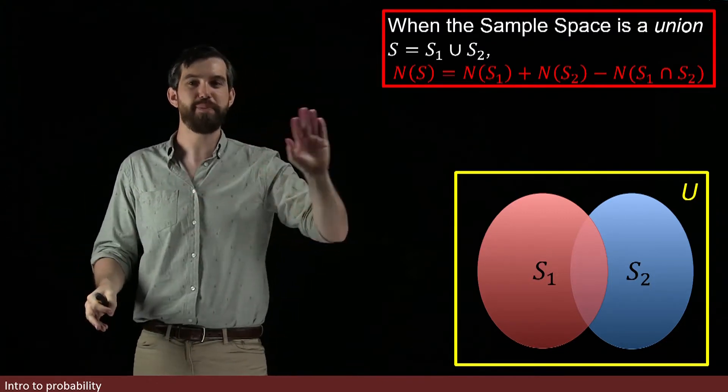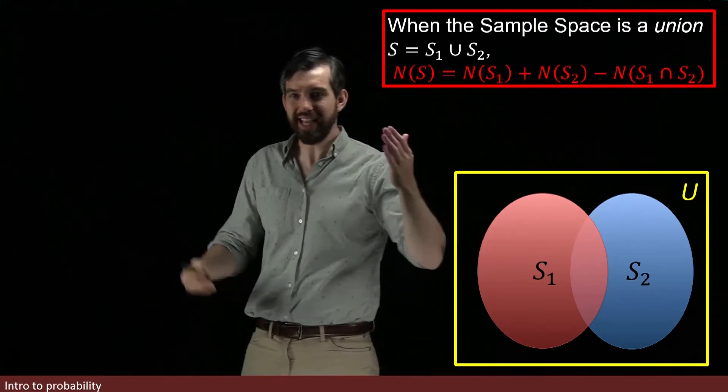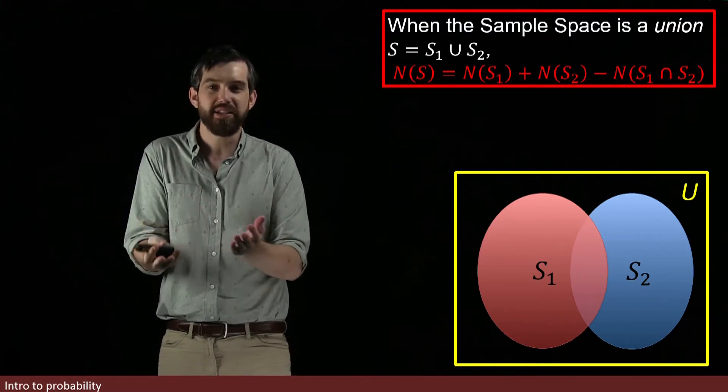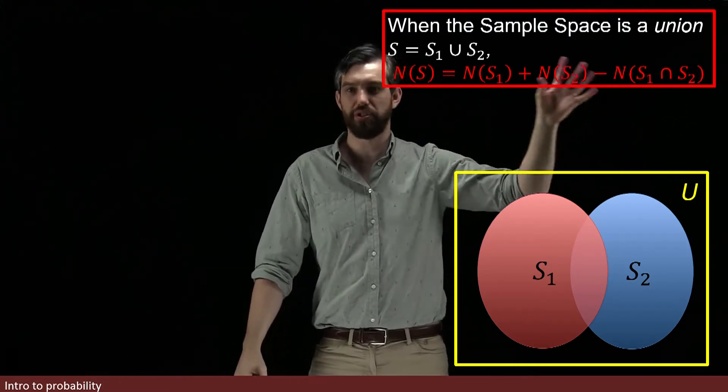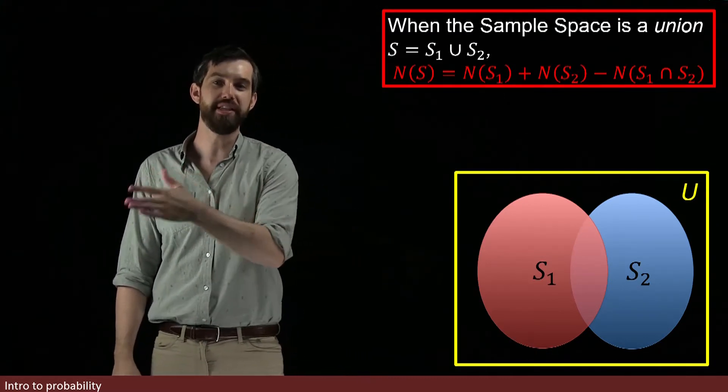The previous formula is just a special case of this. If it's the case that the intersection is empty, that is, if it's the case that it is disjoint, then the number in the empty set is zero and you'd be subtracting off zero. So, this formula is a generalization of the formula for the disjoint unions.